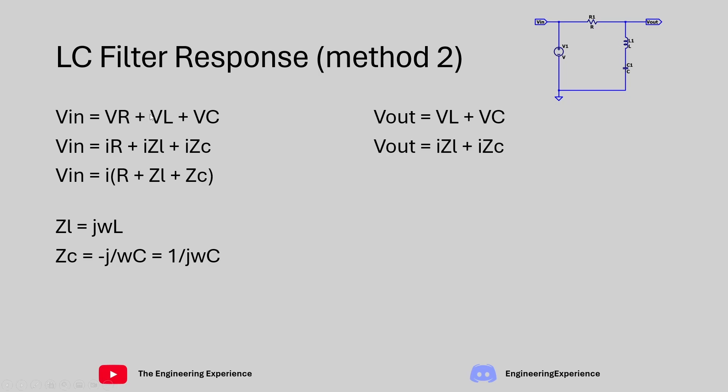Now doing the same thing we did with the V in, we can bring the I outside the bracket and we get V out is equal to I and in brackets we have ZL plus ZC. Now putting V out over V in, we get the equation that's shown on the screen now.